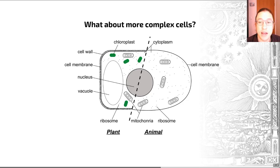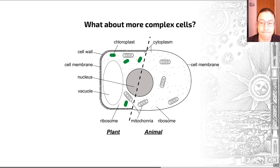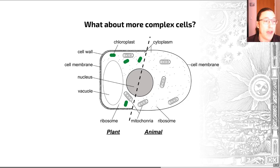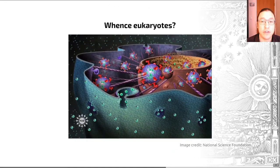The DNA in eukaryotes is held within a nucleus in linear chromosomes. It's generally accepted that the archaea and the eukaryotes are more closely related to each other than they are to bacteria. How they have their origins, however, is a really interesting and different tale.